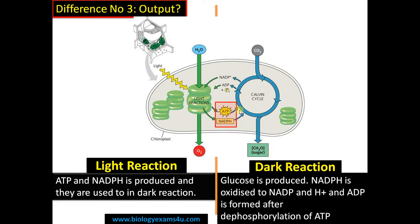During the process, NADPH is oxidized to NADP+ and ATP is dephosphorylated to ADP and Pi, which are required for the further synthesis of ATP and NADPH in light reaction. So this is a cyclic process.